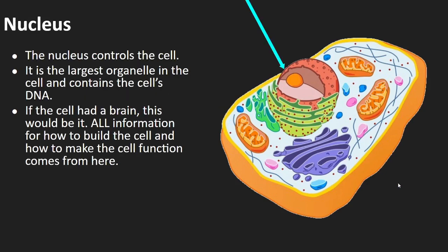Moving along — the nucleus is very important because it houses all of the DNA and it contains all the information for running the cell. Now, remember that in a prokaryote, there is no nucleus. The DNA is just floating around inside of the cytoplasm.